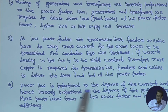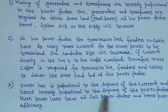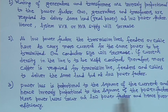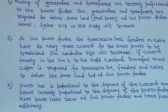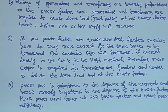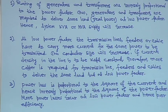Number three: power loss is proportional to the square of the current and hence inversely proportional to the square of the power factor. So more power loss is incurred at low power factor, resulting in poor efficiency. That means transmission line efficiency will be poor because line current will increase and therefore power loss will increase.